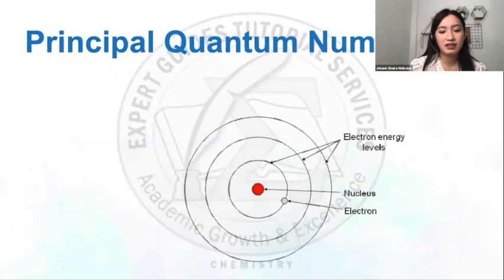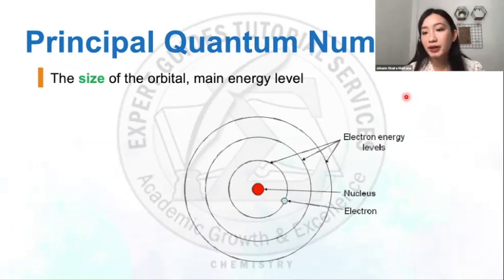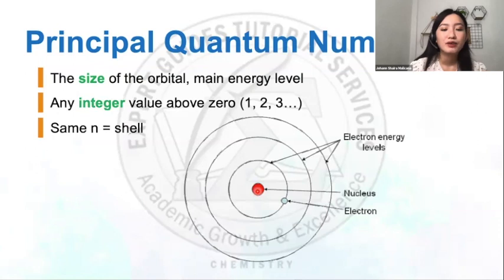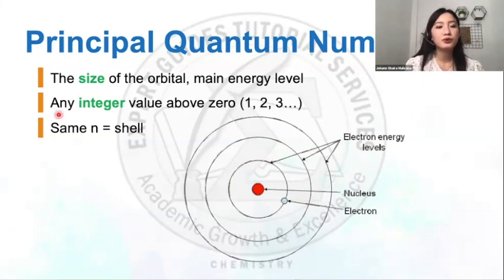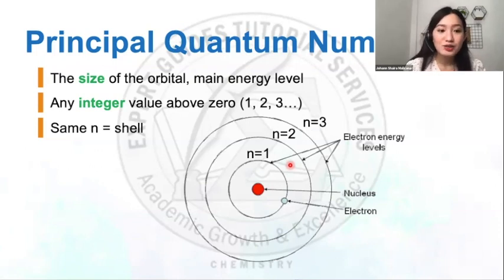The principal quantum number is associated with the energy level within an atom — basically the size of the orbital or the main energy level. Going back to Bohr's atomic model: at the center is the nucleus surrounded by shells. The first energy level is n = 1, the second is n = 2, and the third is n = 3.